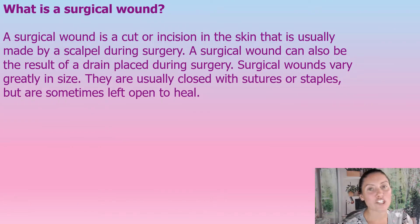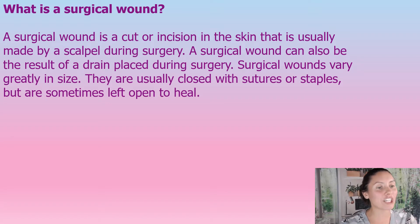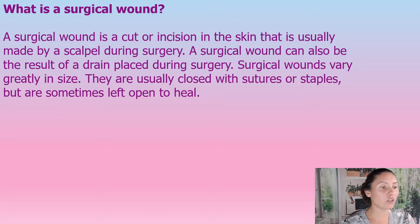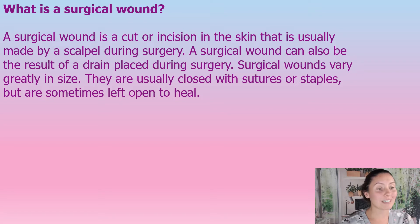So what is a surgical wound? A surgical wound is a cut or incision in the skin that is usually made by a scalpel during surgery. A surgical wound can also be a result of a drain placed during surgery. They vary greatly in size depending on what type of procedure was done, and they're usually closed with sutures or staples, but are sometimes left open to heal.